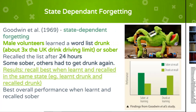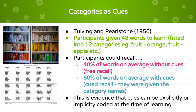Organization improves recall if it gives a structure that provides triggers — for example, being asked to remember words that have been put into categories. To demonstrate this, Tulving and Pearlstone (1956) gave participants 48 words to learn, fitting into 12 categories such as fruit: orange, apple, and so on. They found that participants recalled 40% of words on average in the free recall condition, but were able to recall 60% on average when given the category names as cues. All of these studies provide evidence that cues can be explicitly or implicitly coded at the time of learning.